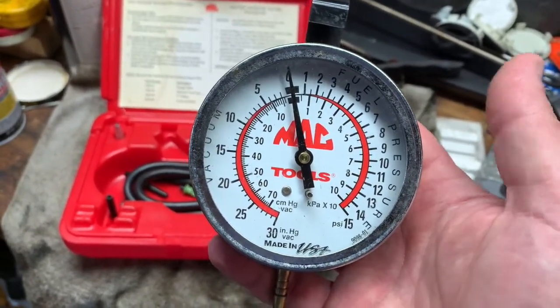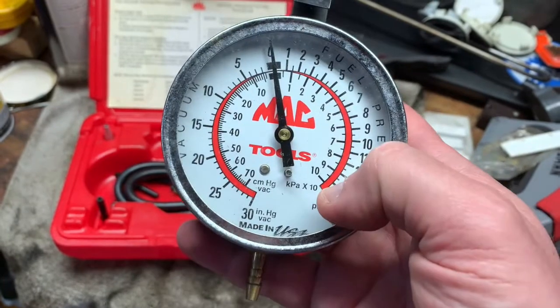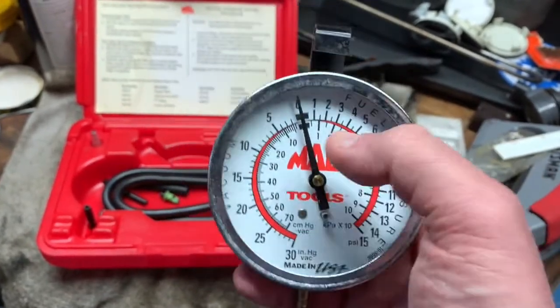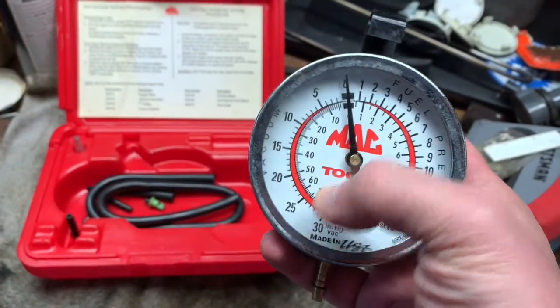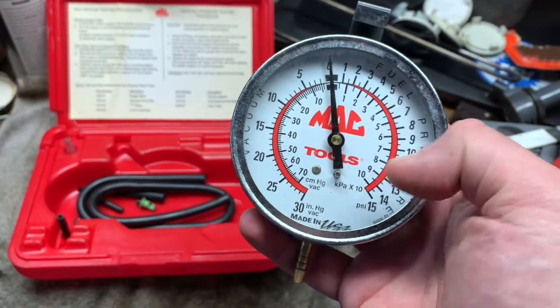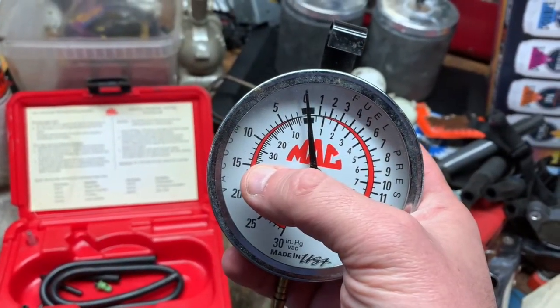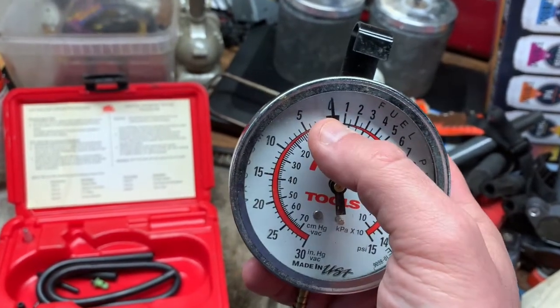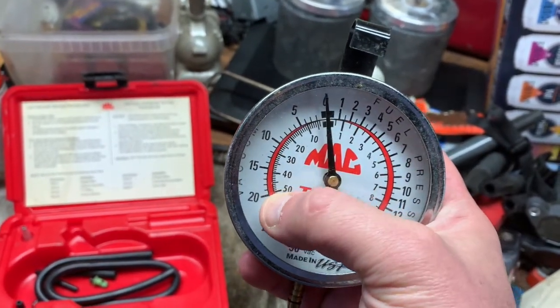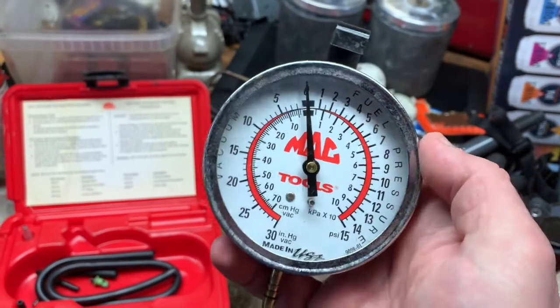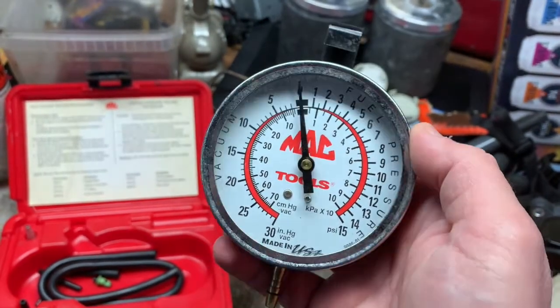The pressure side is pressure, this side is vacuum or suction. When we talk about 15 inches of vacuum, that means that the needle would be there on the 15. If we're talking about 21 inches of vacuum, it means it would be there on the 21.